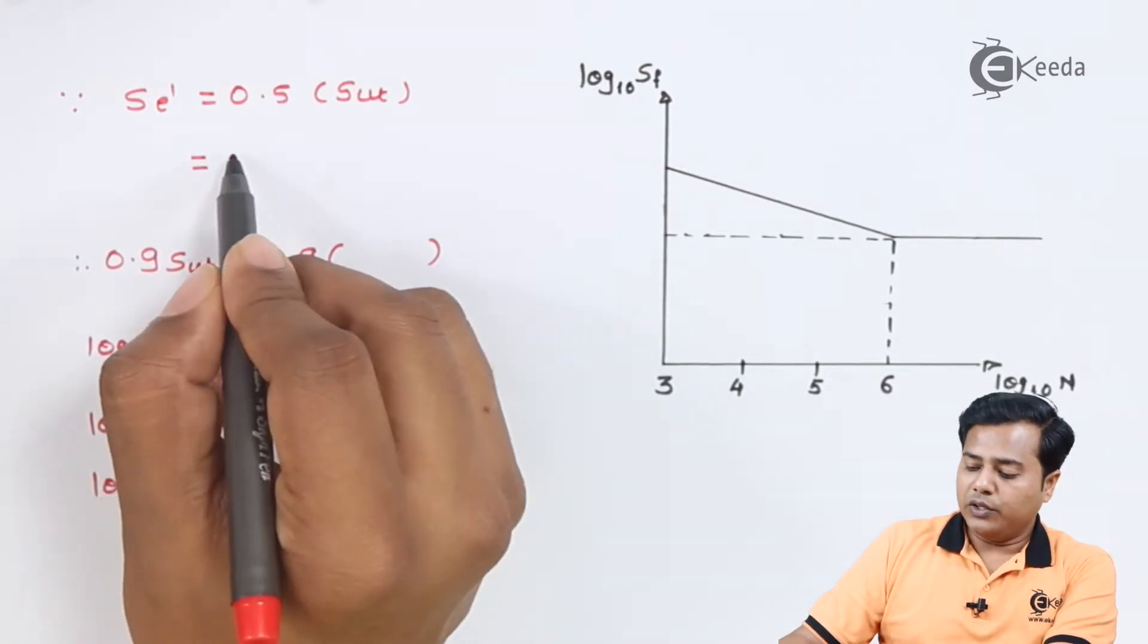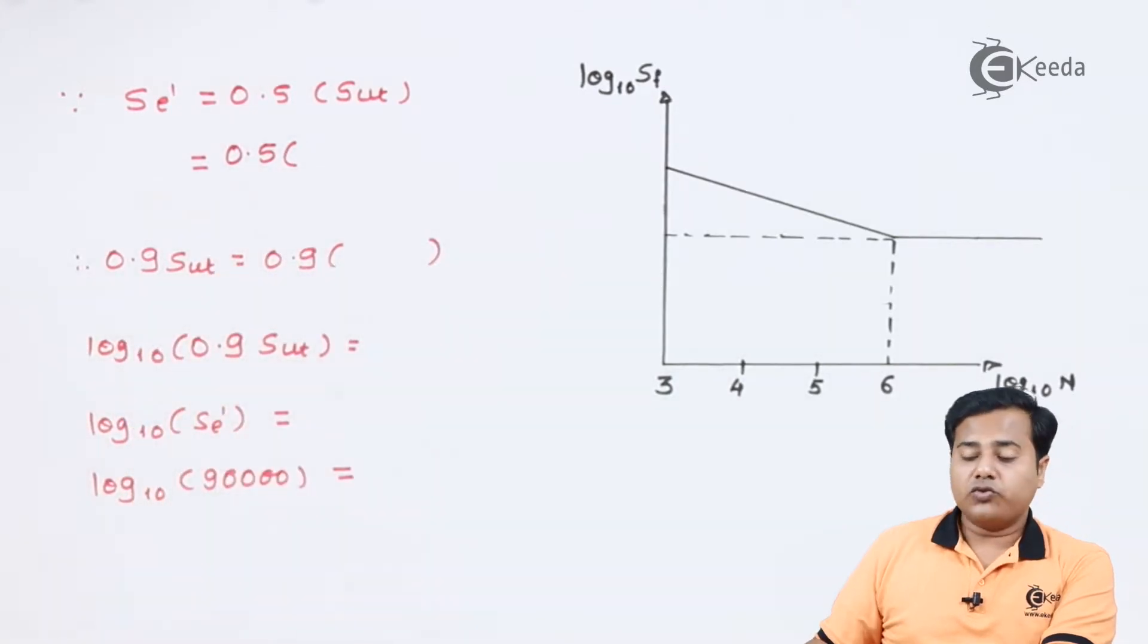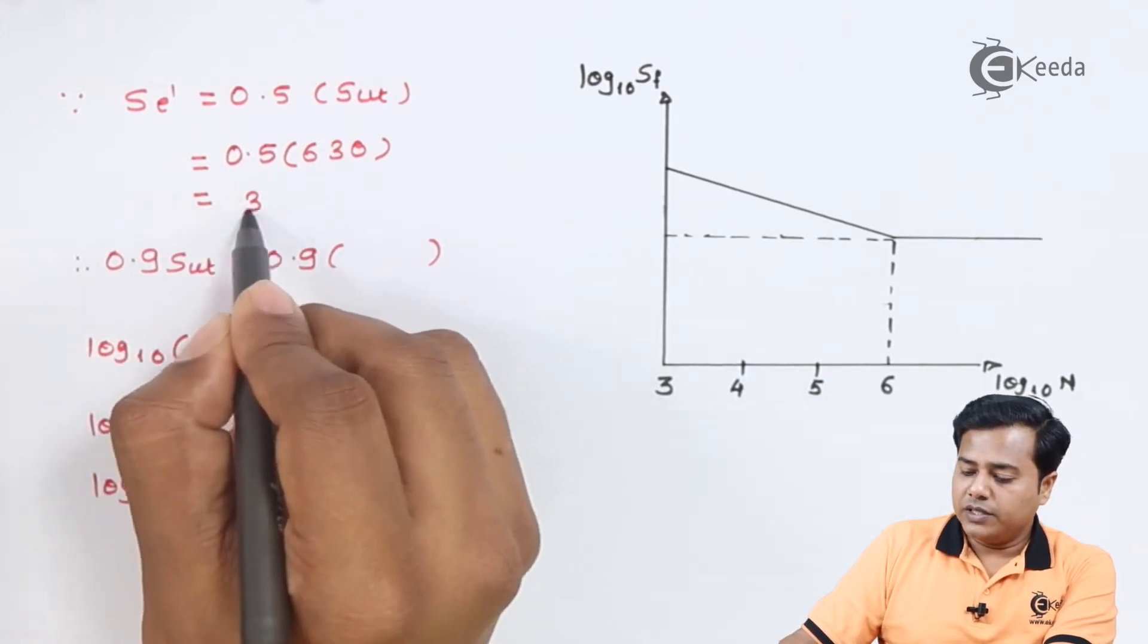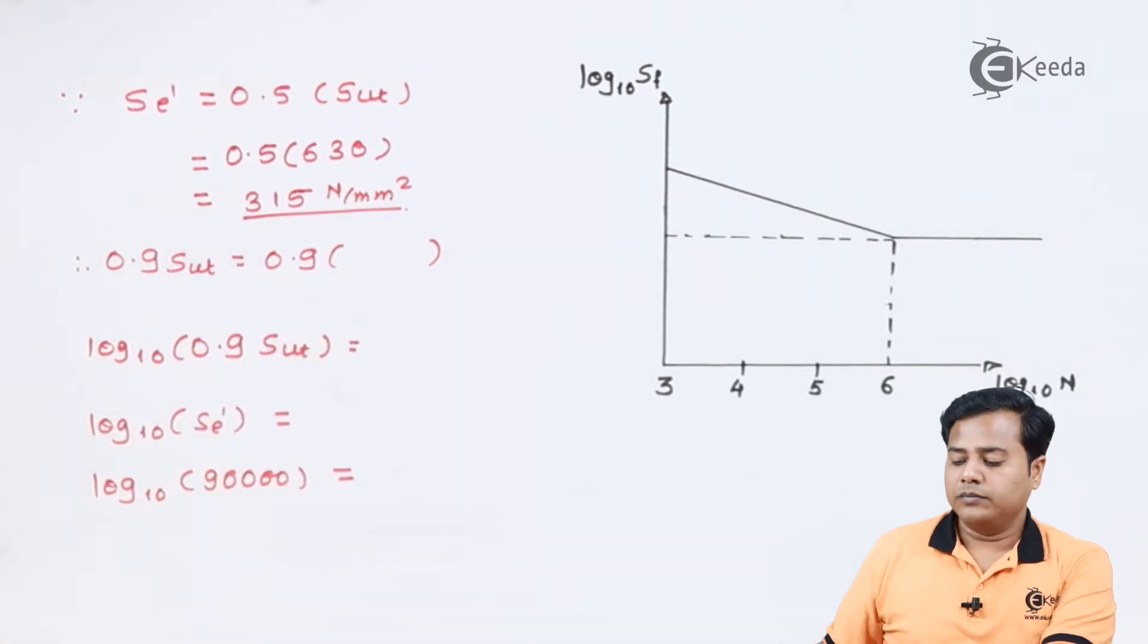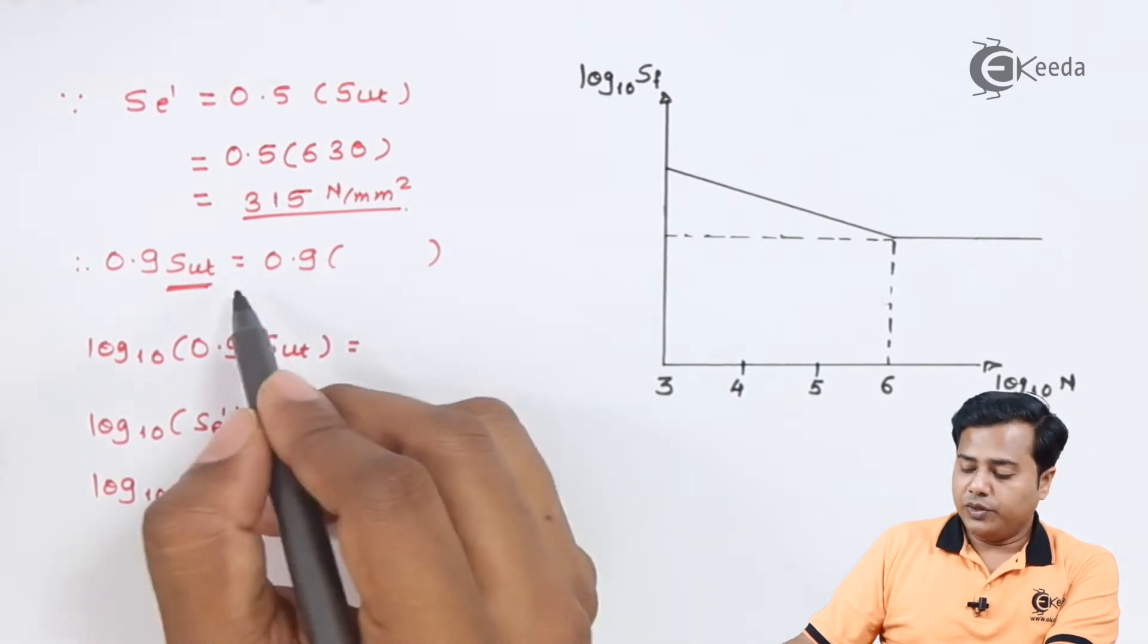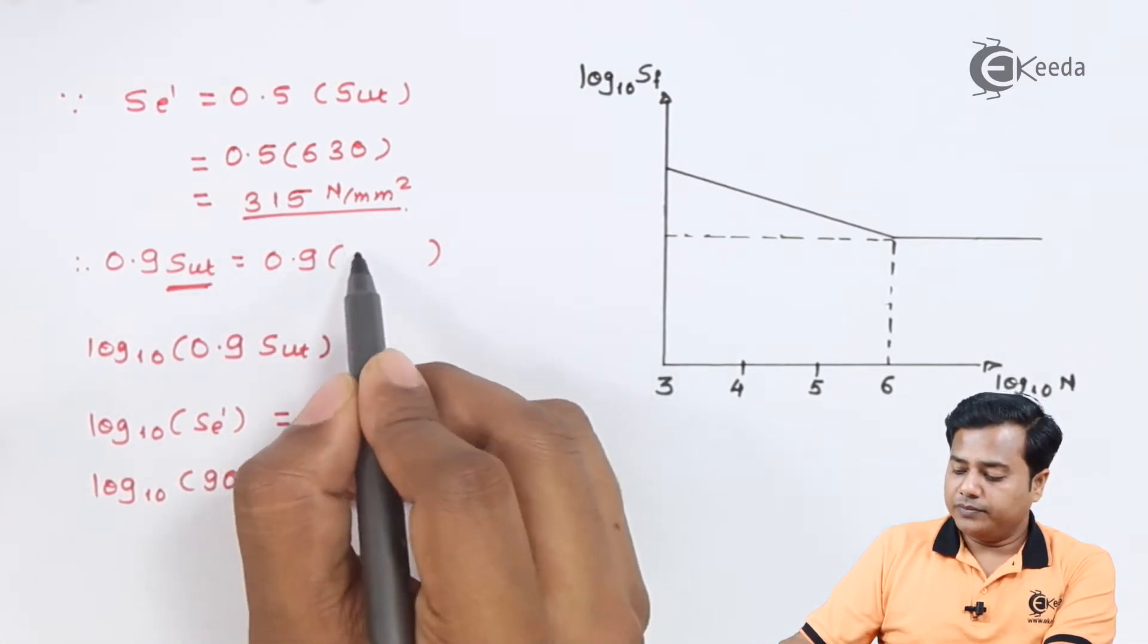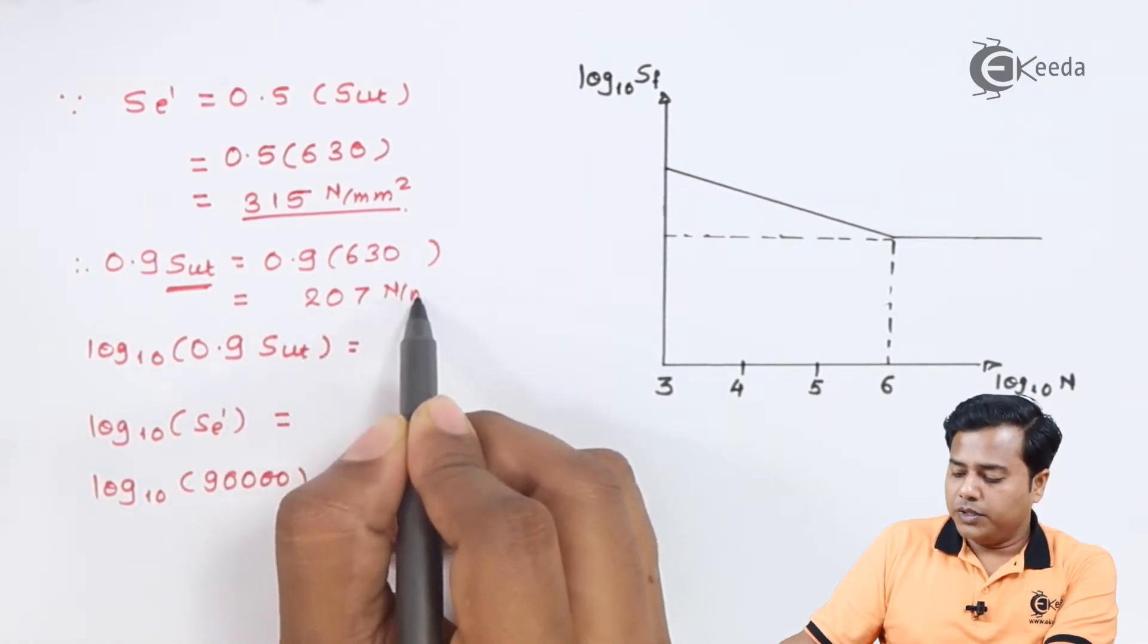Let's move it. Now we know that the corrected value is 315. Somehow the theoretical value we need to find out. The theoretical value stands between 0.5 times the ultimate strength, and which is 315 of course. We know that the ultimate endurance limit value in tension will be given by 0.9 times the value, which comes out to be 567 newton per millimeter square.